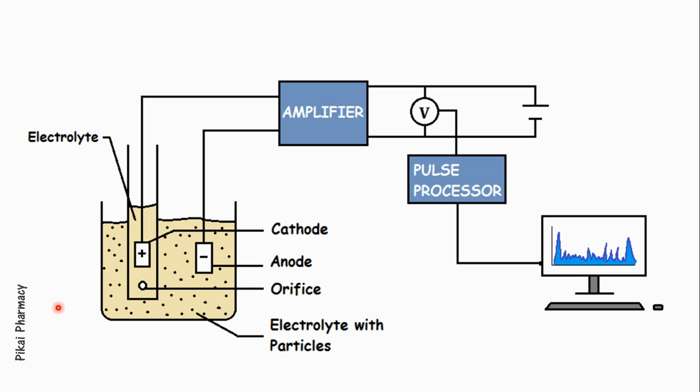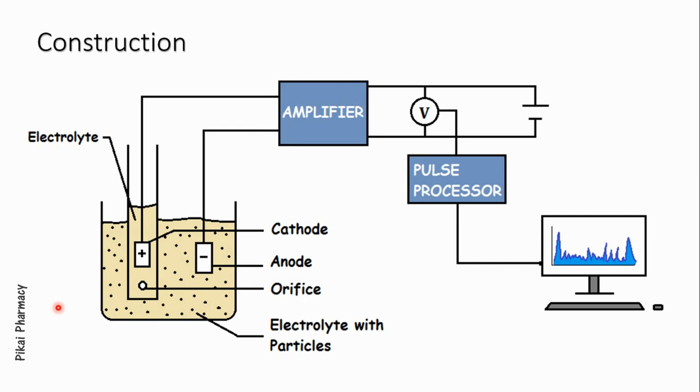Before going to the principle, let me show you its construction. This instrument consists of a container and inside the container there is a glass tube. Both the glass tube and the outer container hold the same electrolyte, but there is a difference: the outer container contains not only electrolytic solution but also particles suspended in it.